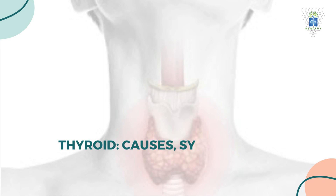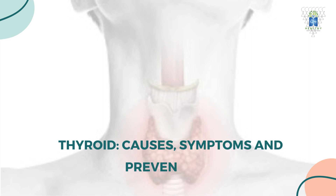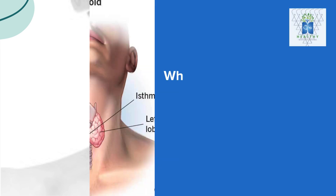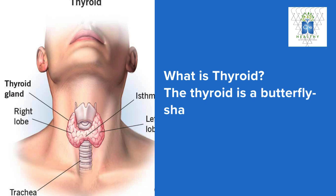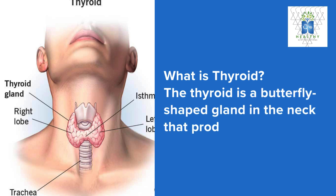Thyroid: causes, symptoms, and preventions. What is thyroid? The thyroid is a butterfly-shaped gland in the neck that produces hormones regulating metabolism.